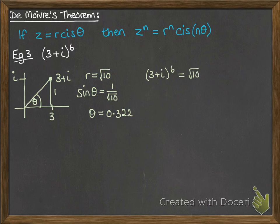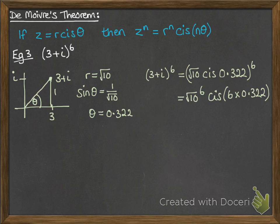So if we put that into polar form, and then we're going to do it to the power of 6, now apply De Moivre's theorem, and we'll do the modulus to the power of 6, and theta times 6, and we get this.